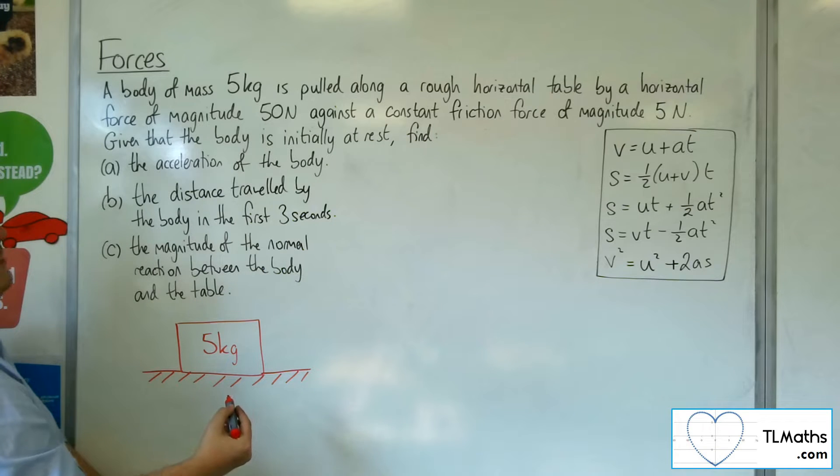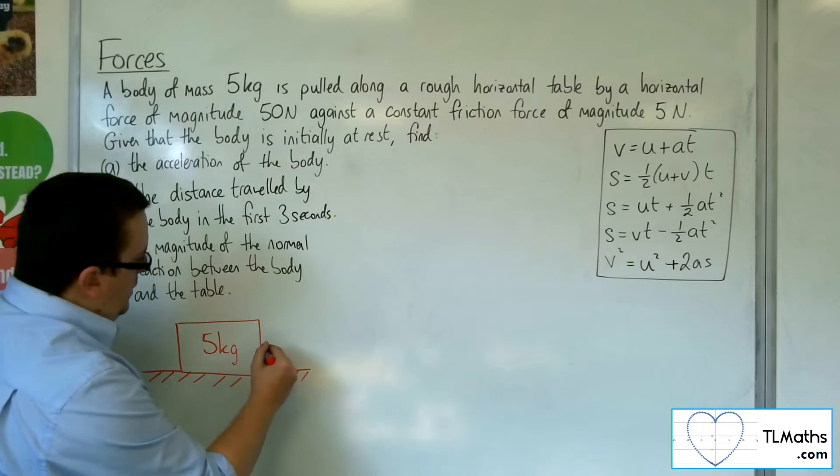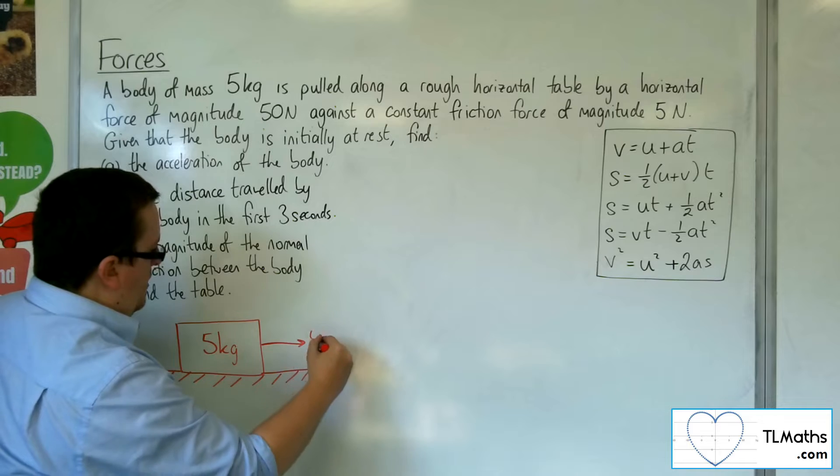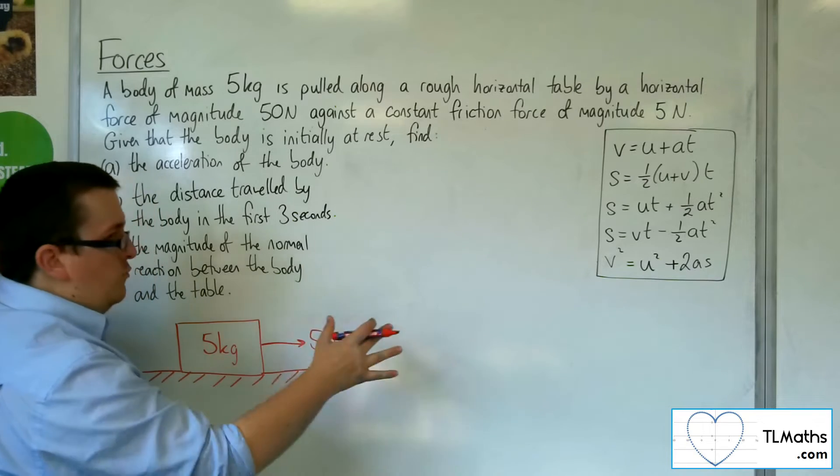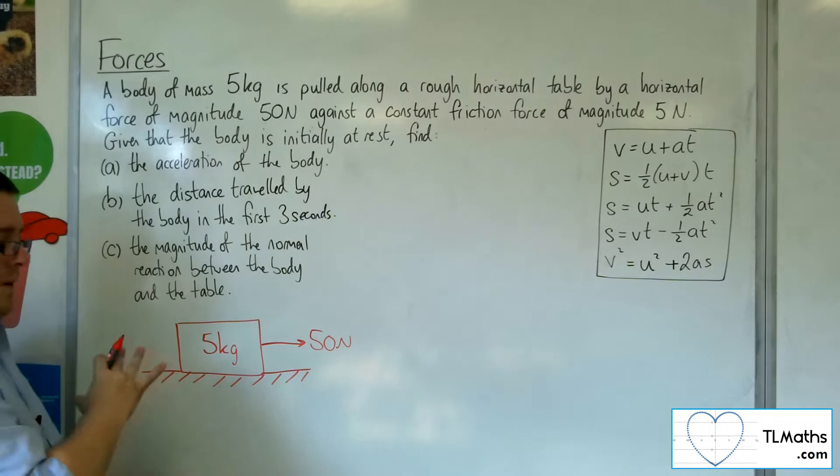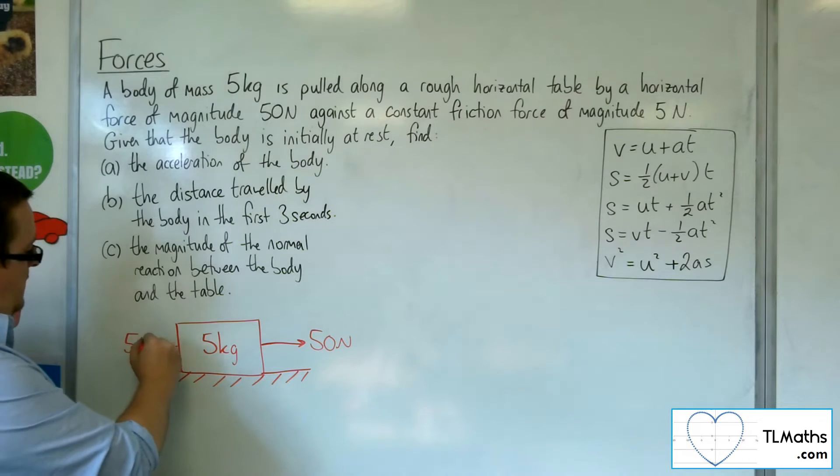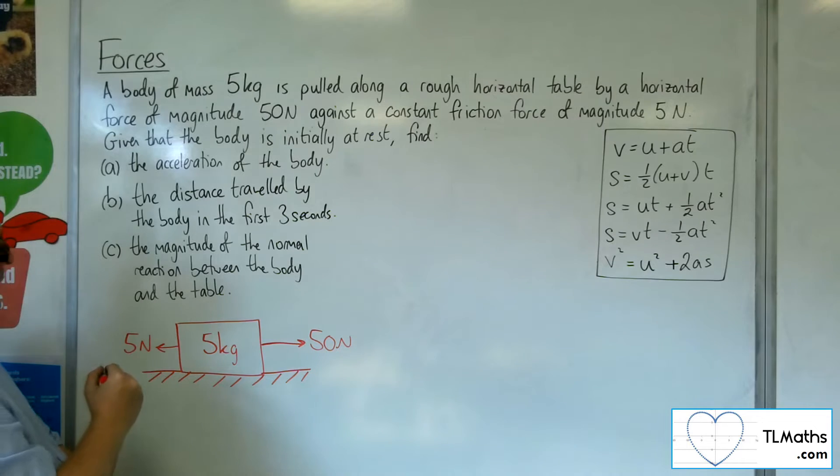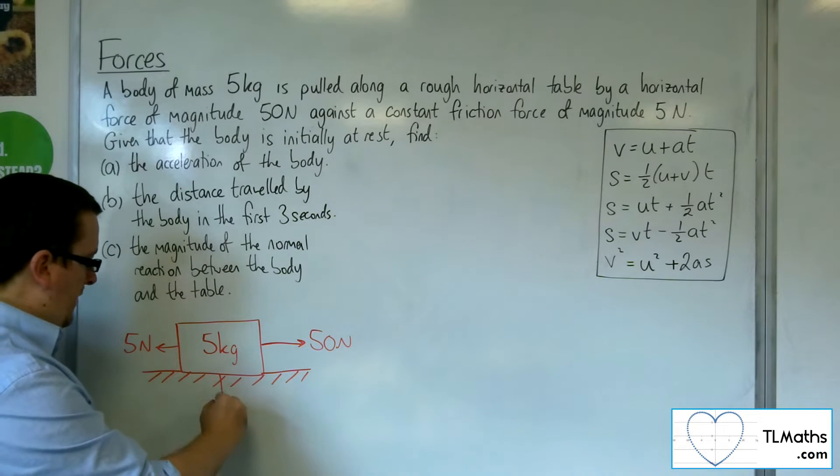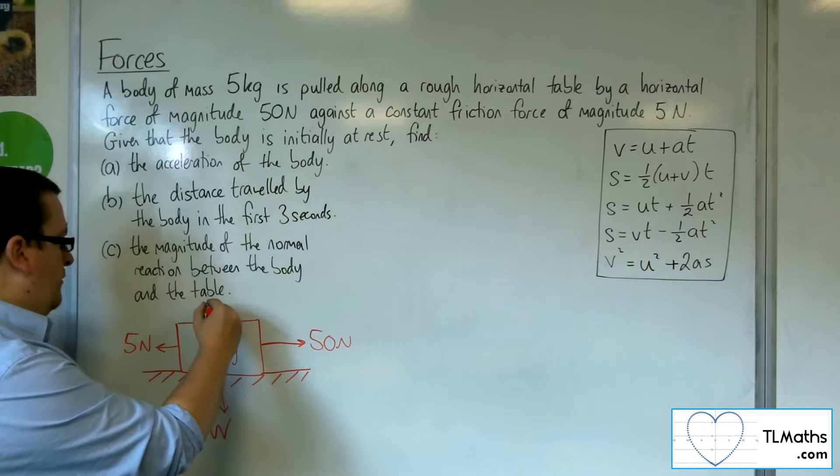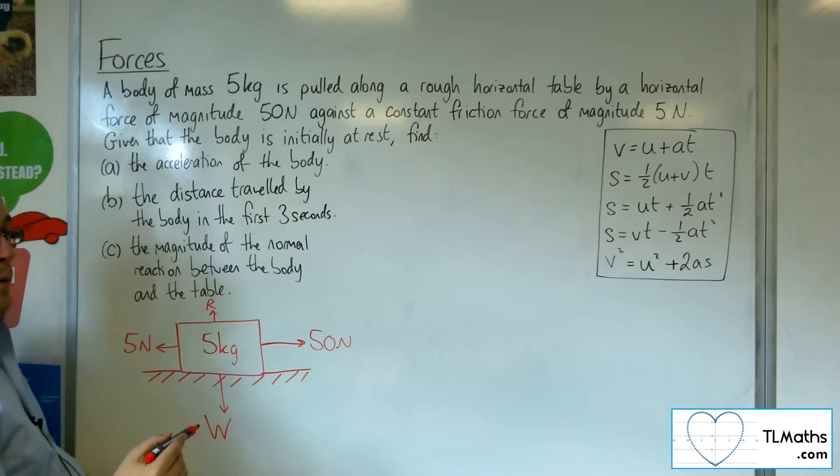Now it's being pulled along by a force of magnitude 50 newtons, so I'm going to draw that one there so it's pulling it to the right. That's really my choice, but that's the way I'm going to visualize it. And it's got a constant friction force of magnitude 5 newtons working to the left against me. Now there's also the particle's weight working downwards, and we've got the normal reaction force R working upwards.